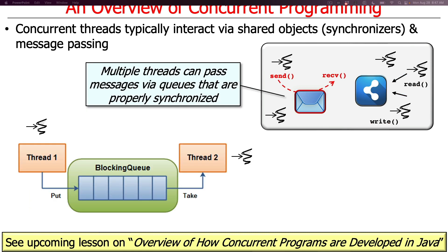Another way to communicate is through message passing, which allows multiple threads to interact by putting messages into thread-safe queues, sometimes called blocking queues that are properly synchronized. Message passing pushes the synchronizers down below a nice facade that's much easier to program to and reason about, because you're abstracting away from the low-level details of shared objects and synchronization.